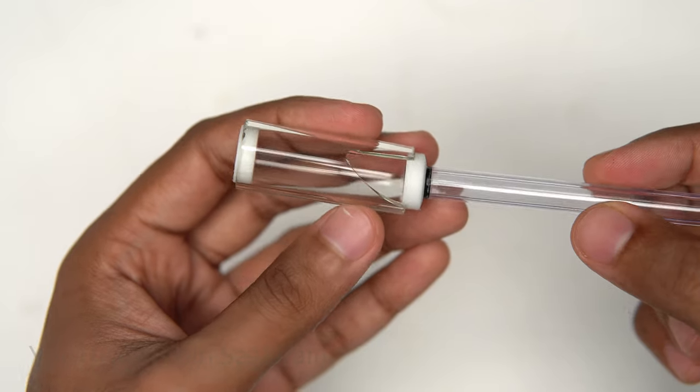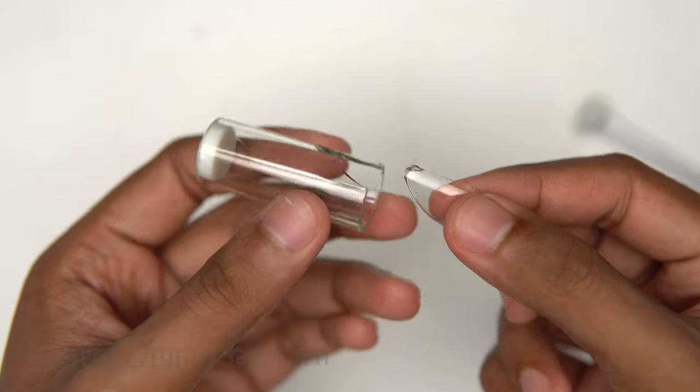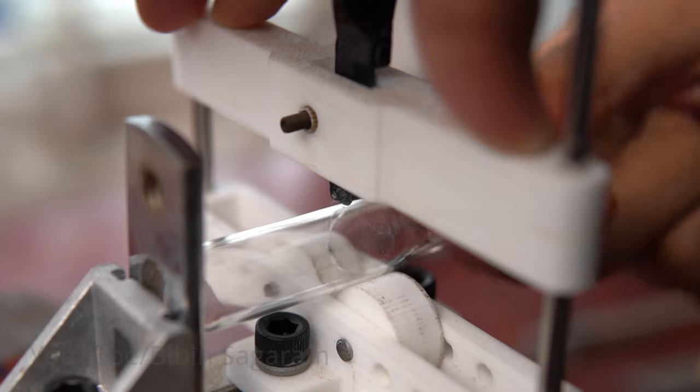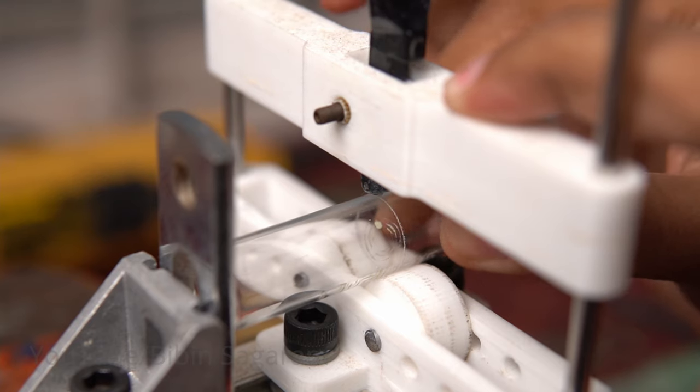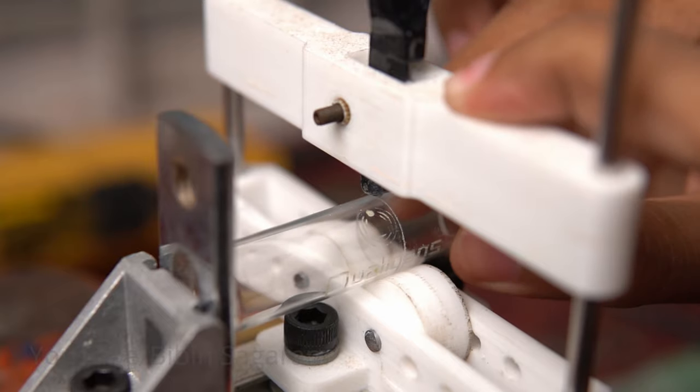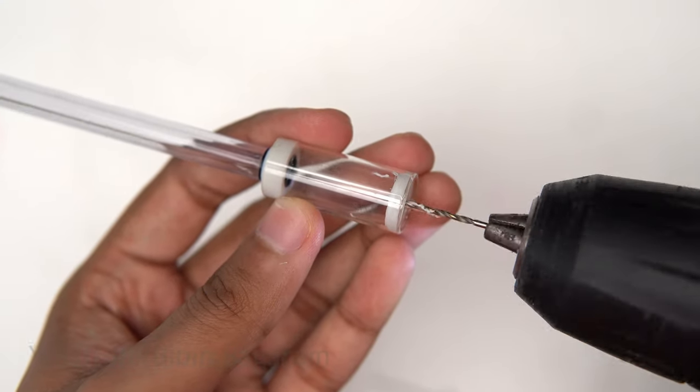As expected I applied too much force and broke the glass. Maybe I can use end of this test tube as the chamber or maybe not. At last I managed to cut a nice glass tube from the test tube for the chamber without breaking it. Borosilicate glass is preferred since it can handle thermal shock.